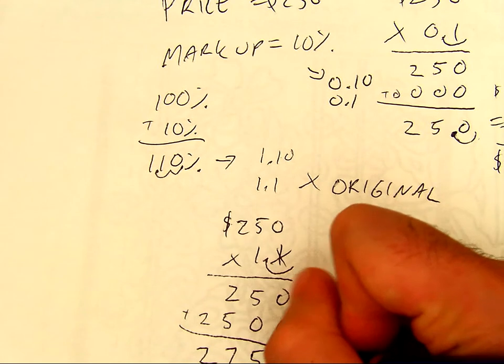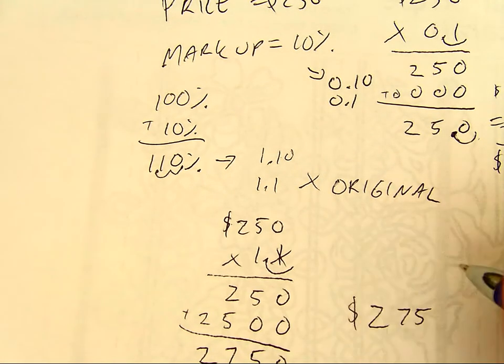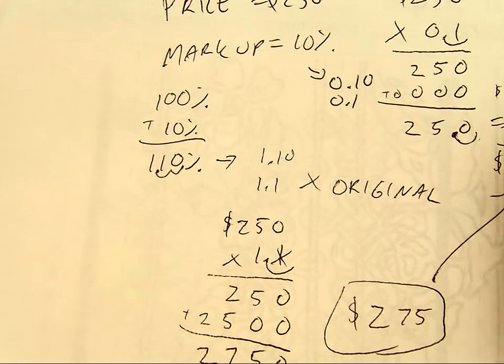So I have 1 decimal place. Just like that, I have $275. That was a much shorter way than doing it the long way.